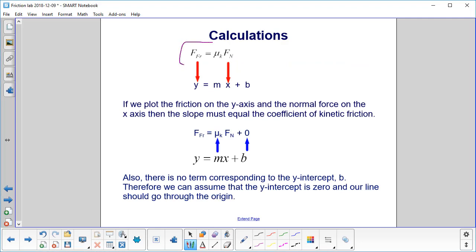So here's our algebraic equation here, friction is mu k times normal. Let's compare it to the slope-intercept form. The friction would be on the y-axis, x would be the normal, and what would m equal? Looks like m is going to equal mu k.